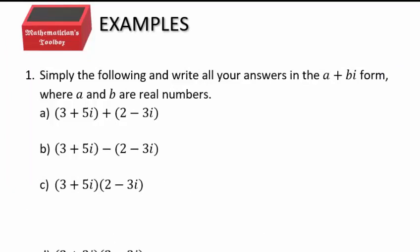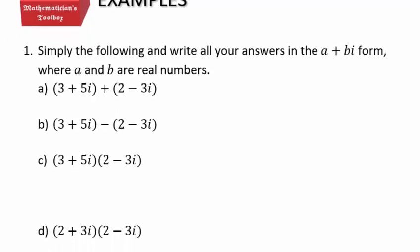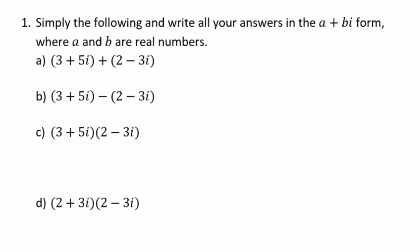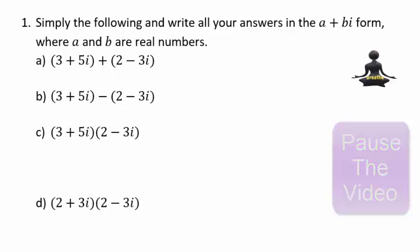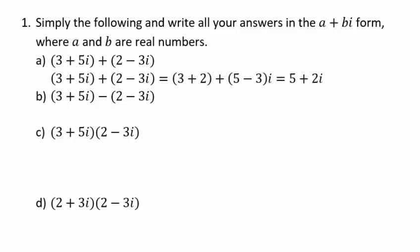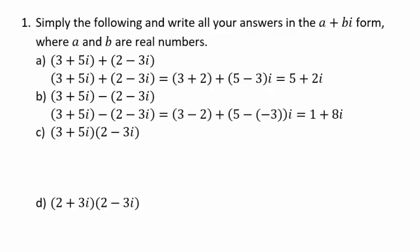Our natural question: how do we do arithmetic with complex numbers? For addition, combining like terms: (3 + 5i) + (2 - 3i) gives 5 + 2i. For subtraction: 3 - 2 = 1, and 5 - (-3) gives 8i, so the result is 1 + 8i.